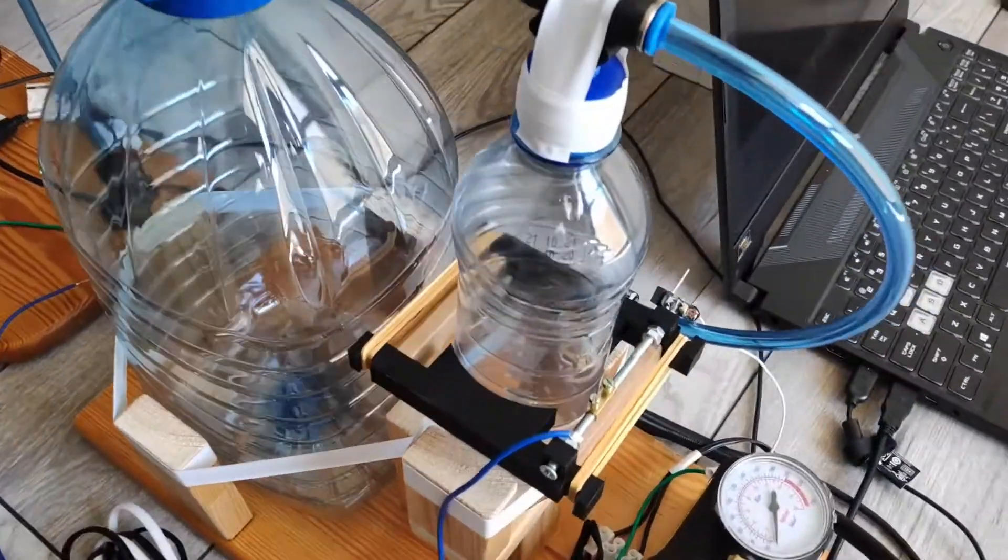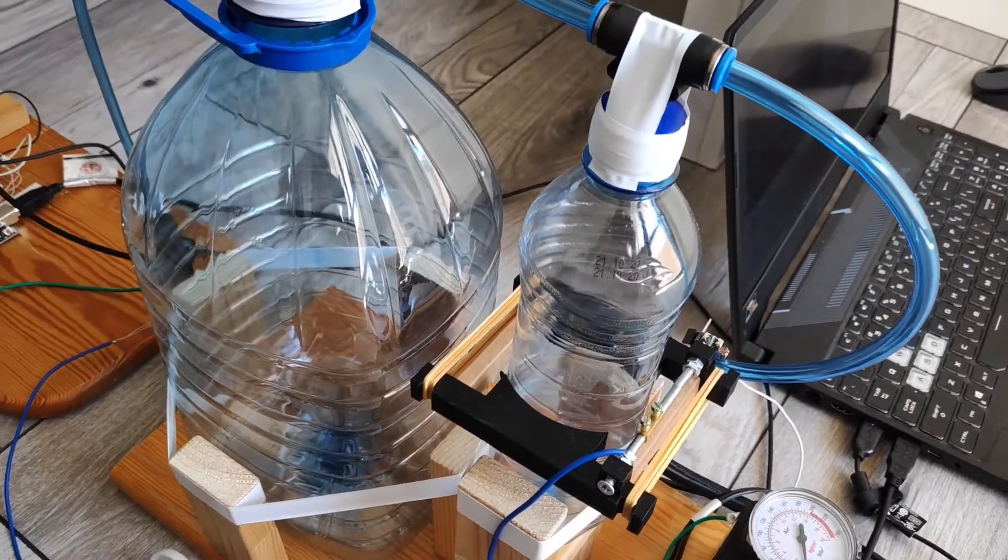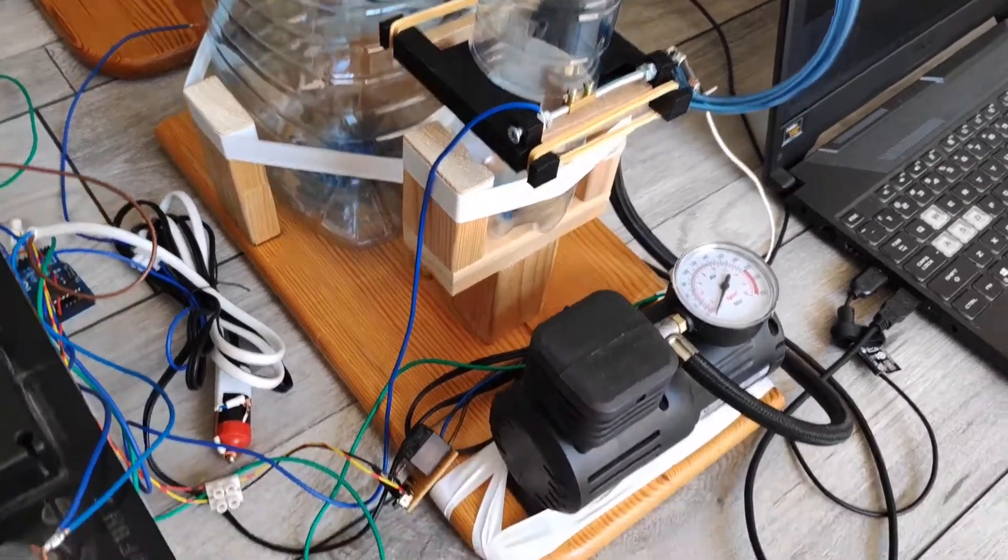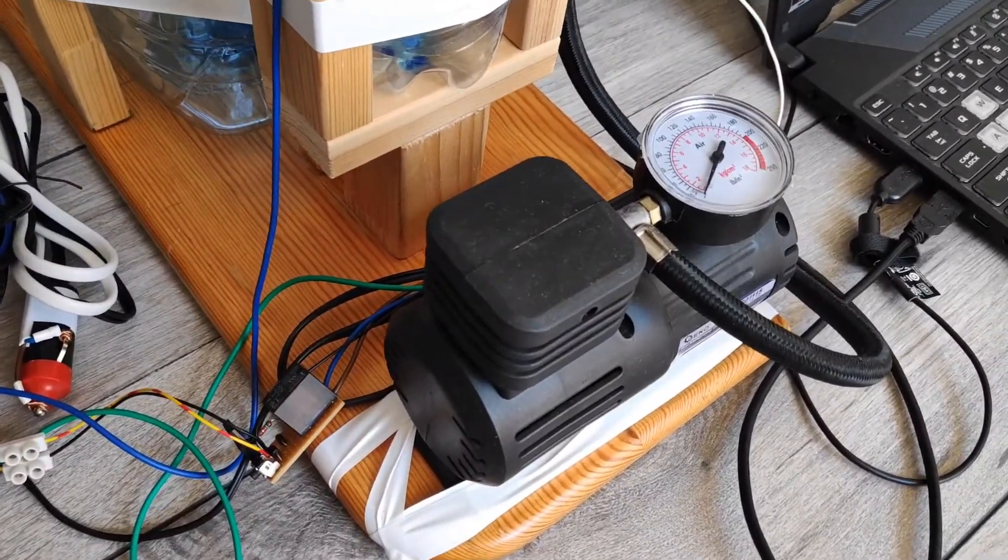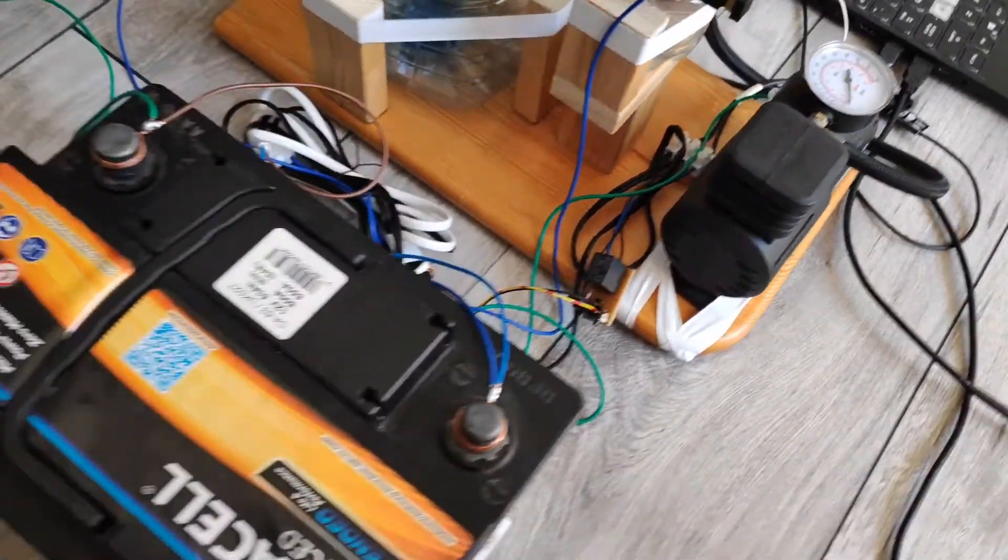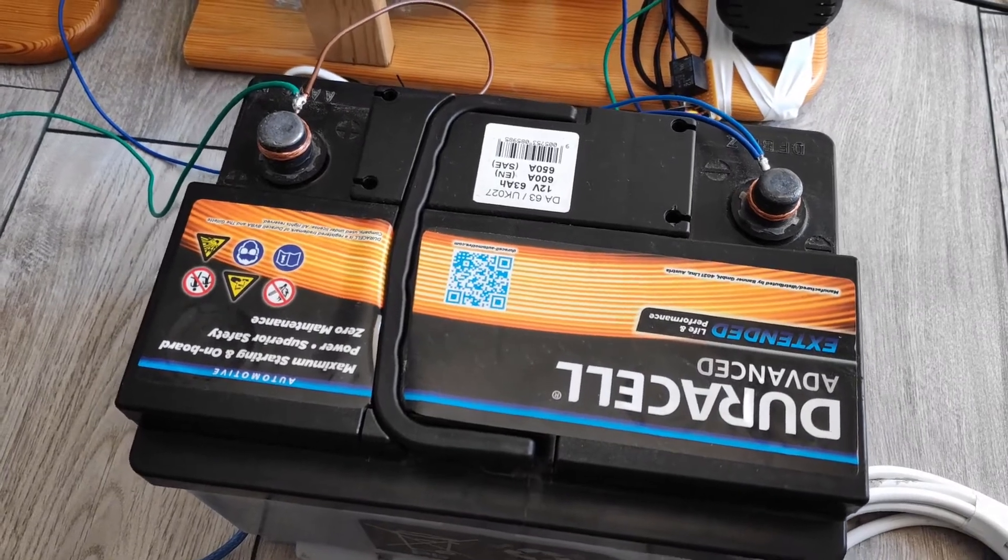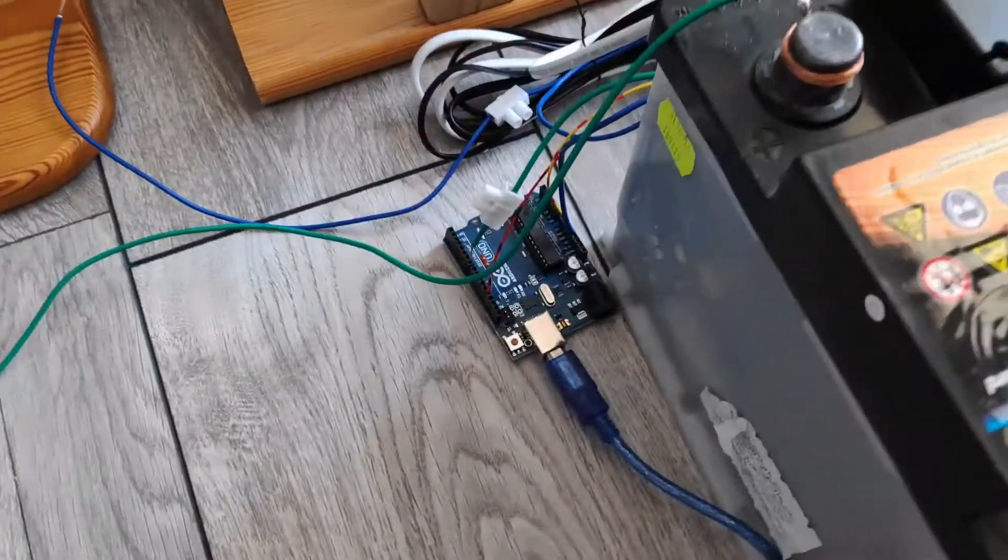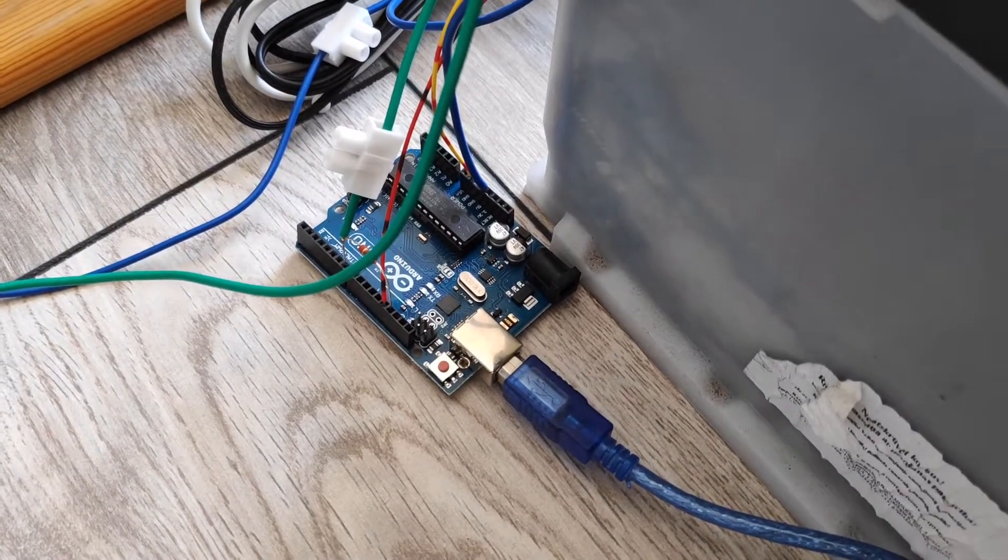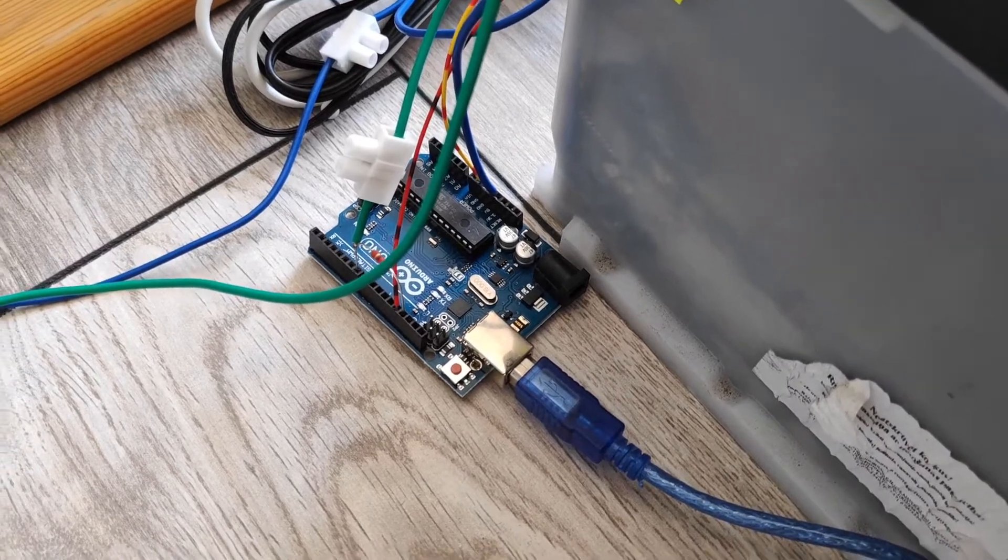And this is a DIY pressure sensor that is used to monitor the pressure in the system. Also about this one I will talk a bit more later. Then we have an also DIY air compressor that keeps the pressure up, a lead-acid battery that powers the air compressor and the compressed air valve and the second Arduino board that reads the signal from compressed air sensor and controls the air compressor accordingly.